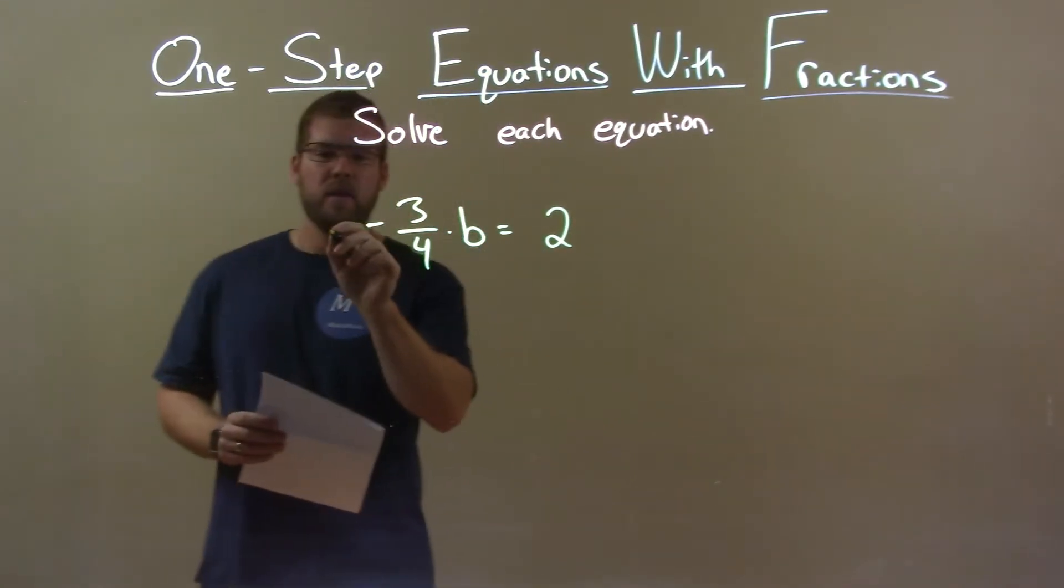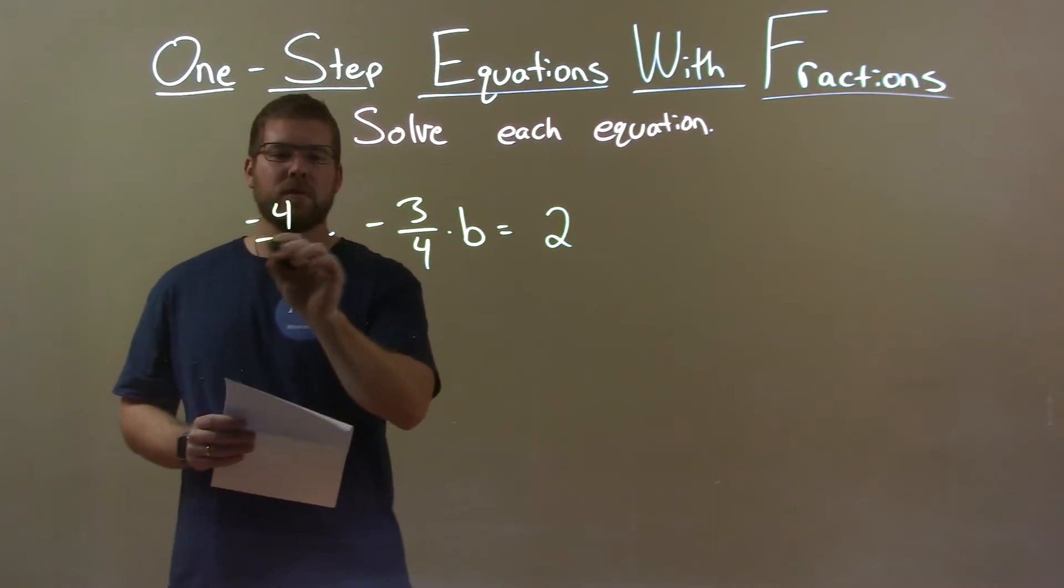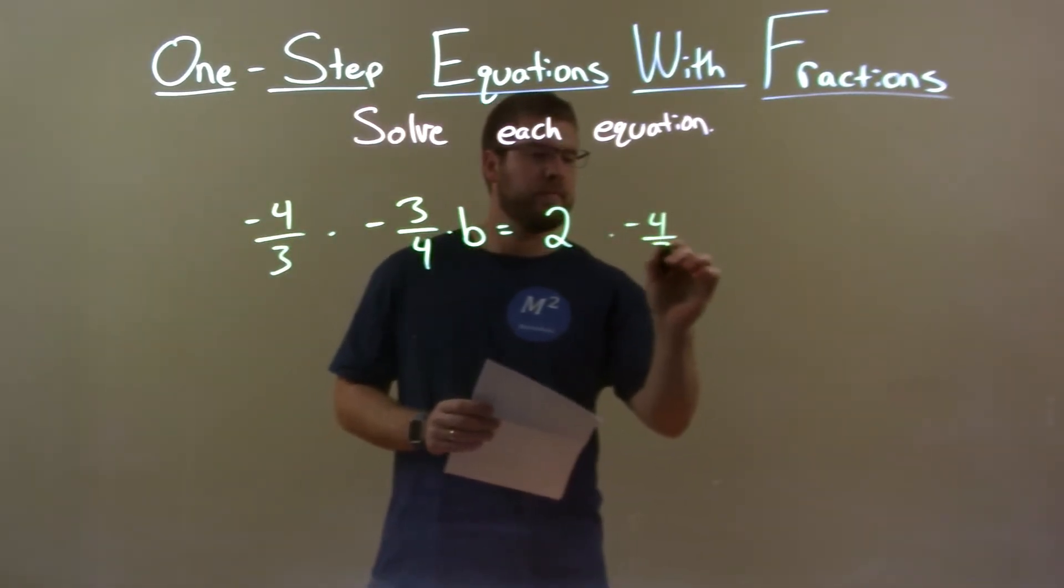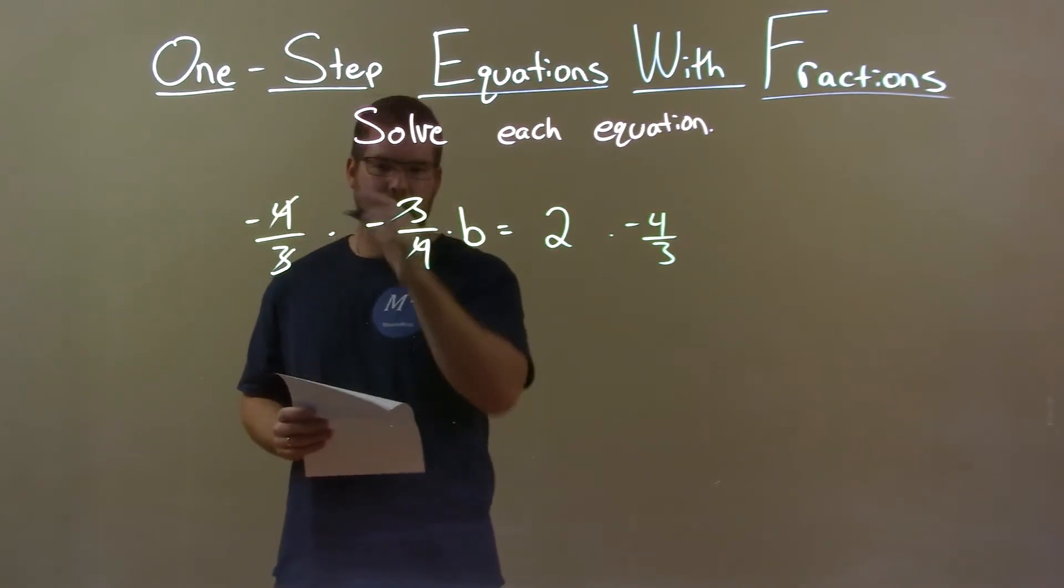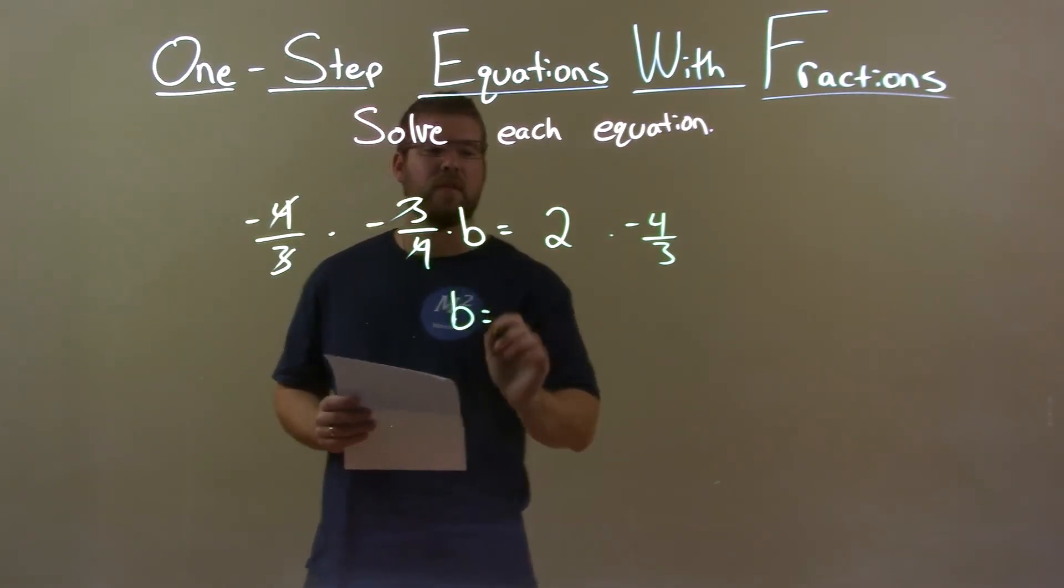both sides, right? The reciprocal is a negative 4 thirds. This eliminates the 3's cancel, the 4's and the minus sign cancels. It's giving me B by itself on the left.